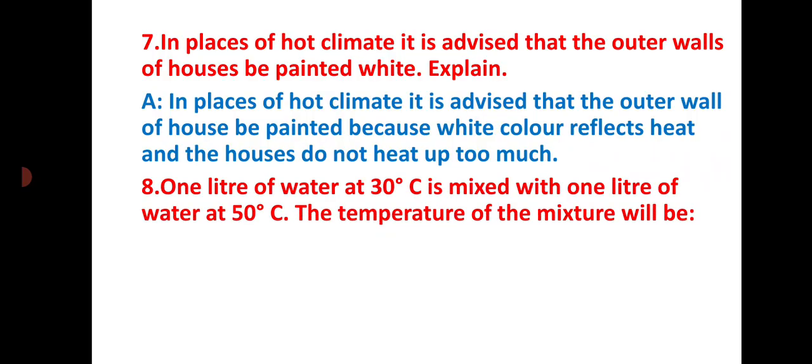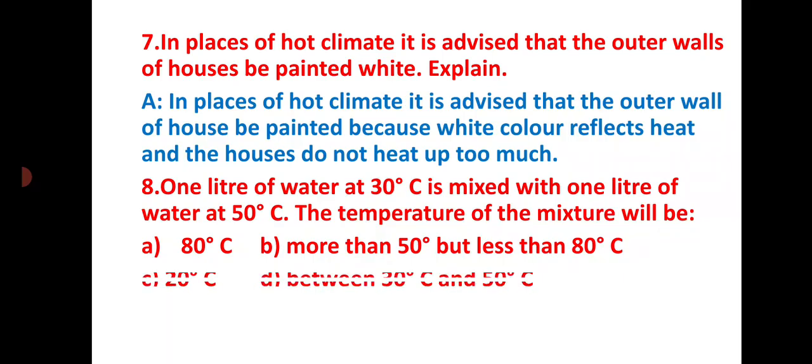Question number eight: one liter of water at 30 degrees Celsius is mixed with one liter of water at 50 degrees Celsius. The temperature of the mixture will be: 80 degrees Celsius, more than 50 degrees but less than 80 degrees, 20 degrees Celsius, or between 30 to 50 degrees. The answer is between 30 to 50 degrees.